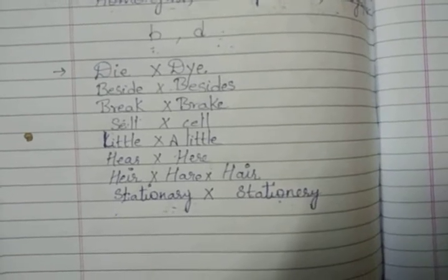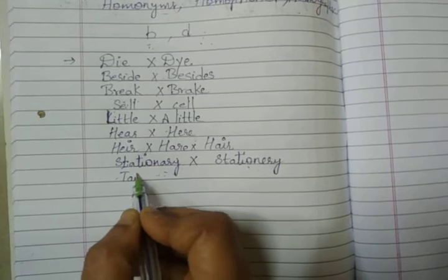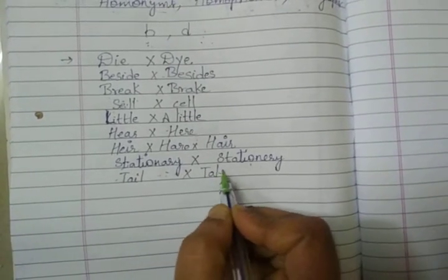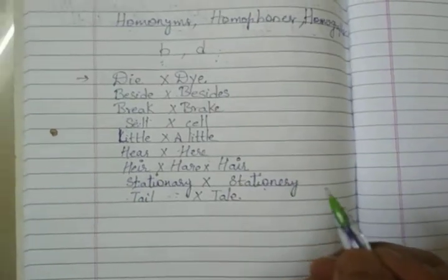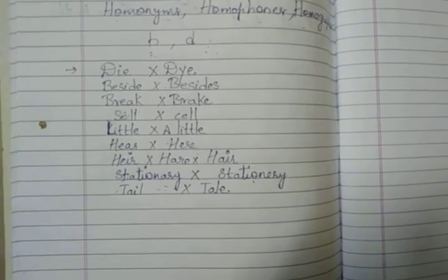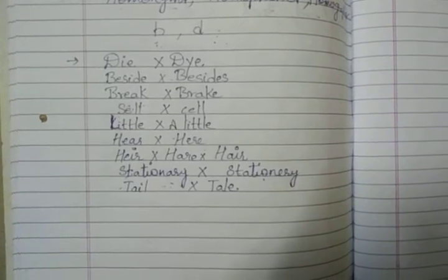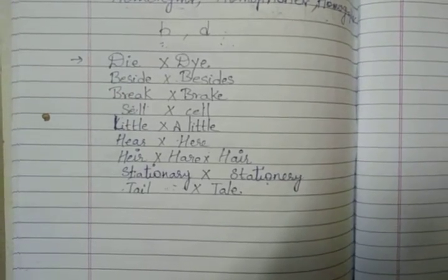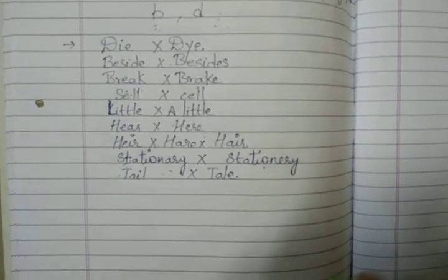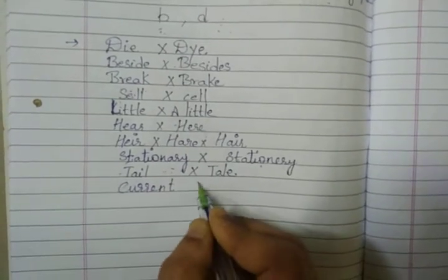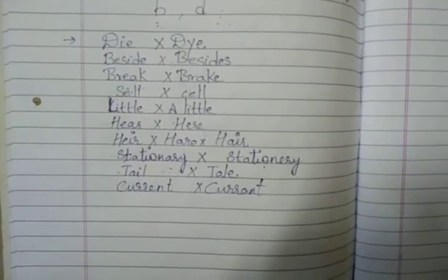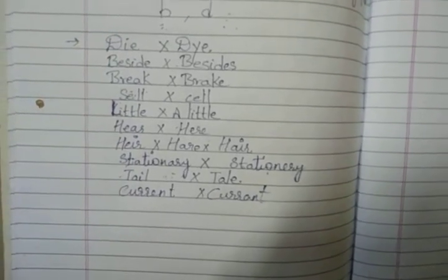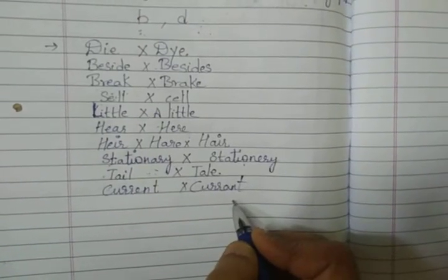Next: 'tail' and 'tale.' We know what a tail is — the tail of an animal. And 'tale' — T-A-L-E — is a story. Next: 'current' and 'currant.' We know what current means — electric current or a flow. And 'currant' refers to dried grapes, a dried fruit.